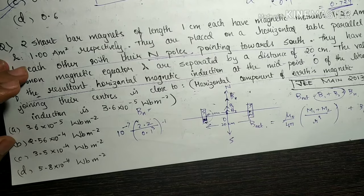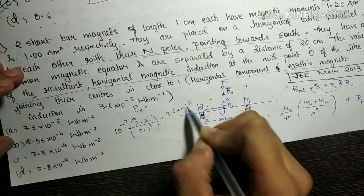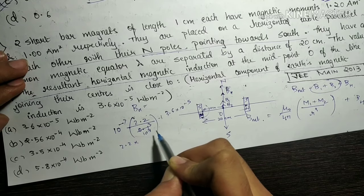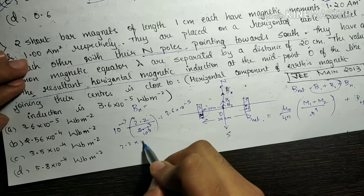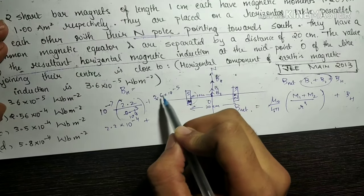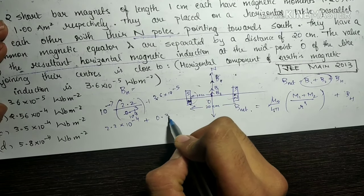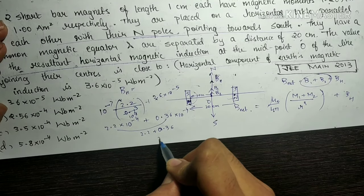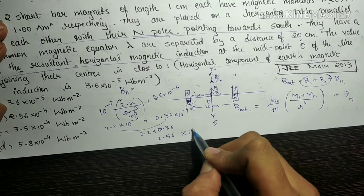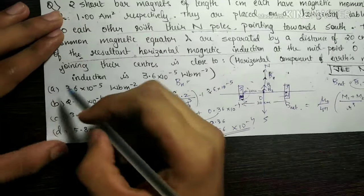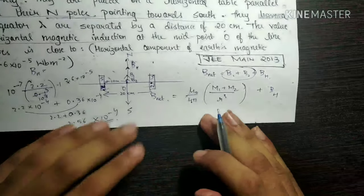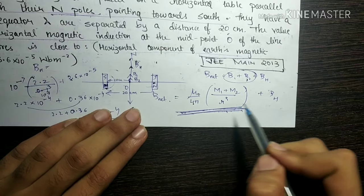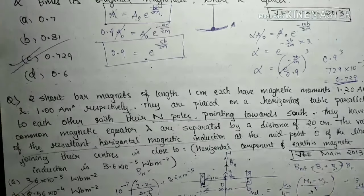Substituting: 10⁻⁷ × 2.2 / (0.1)³ + 3.6×10⁻⁵ = 2.2×10⁻⁴ + 0.36×10⁻⁴ = 2.56×10⁻⁴ Wb/m². So option B is the correct answer. We used the formula (μ₀/4π)×(m1+m2)/r³ for the resultant of the two magnets and added BH to get the final answer of 2.56×10⁻⁴ Wb/m².